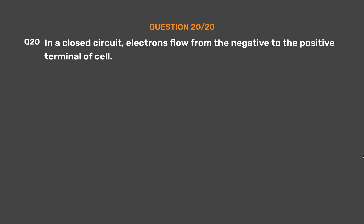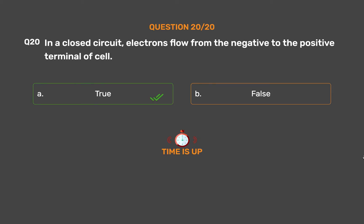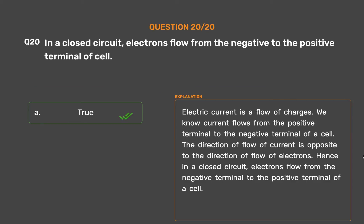Question number 20. In a closed circuit, electrons flow from the negative to the positive terminal of the cell. Option A: True. Option B: False. The correct answer is Option A, True. Electric current is a flow of charges. We know current flows from the positive terminal to the negative terminal of a cell. The direction of flow of current is opposite to the direction of flow of electrons. Hence, in a closed circuit, electrons flow from the negative terminal to the positive terminal of a cell.